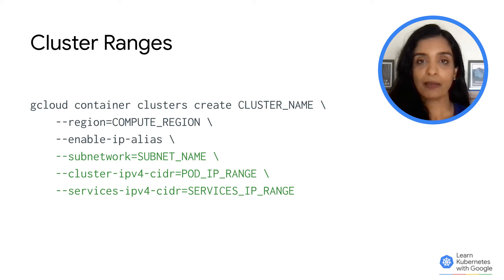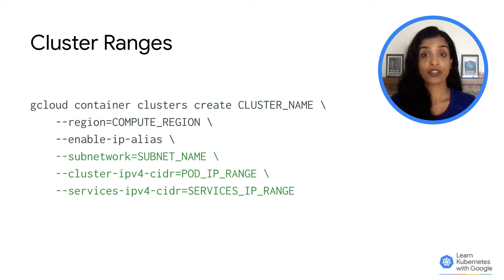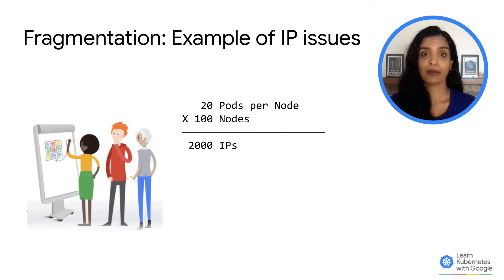Here's an example of creating a cluster where three IPv4 ranges are required for assigning to nodes, pods, and services. For clusters scaling to hundreds or thousands of nodes and pods, the IPv4 requirements for a Kubernetes cluster can be quite demanding. For example, assume you want to create a 100-node cluster with room to scale and have services.